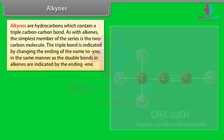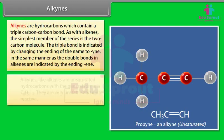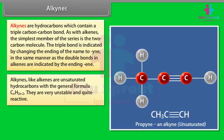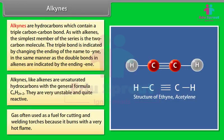Alkynes are hydrocarbons which contain a triple carbon-carbon bond. As with alkenes, the simplest member of the series is a two-carbon molecule. The triple bond is indicated by changing the ending of the name to '-yne', in the same manner as double bonds in alkenes are indicated by '-ene'. Alkynes, like alkenes, are unsaturated hydrocarbons with the general formula CnH2n-2. They are very unstable and quite reactive. For example, ethyne (commonly known as acetylene) is a gas often used as a fuel for cutting and welding torches because it burns with a very hot flame.